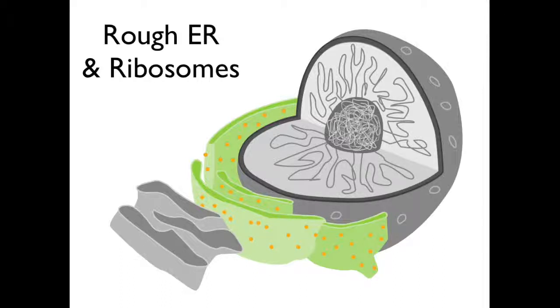This endoplasmic reticulum is called rough because it is studded by ribosomes, shown here as orange dots. The ribosome is the site where mRNA is translated into a protein.